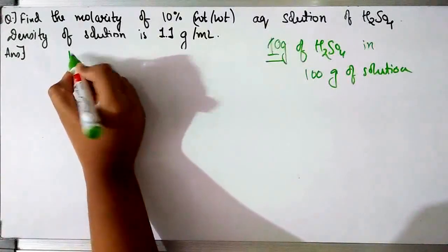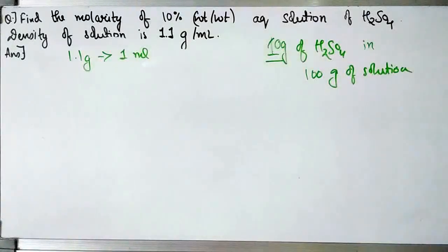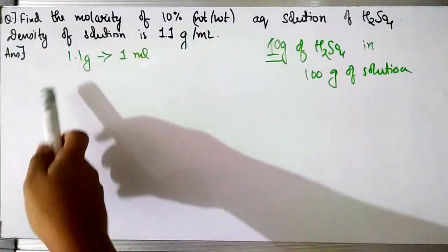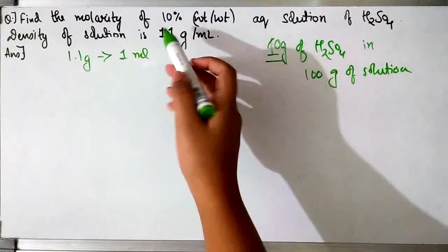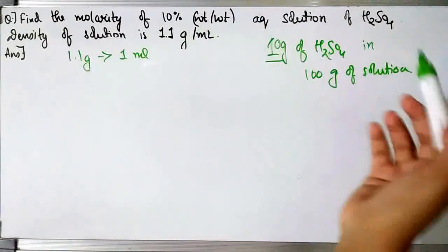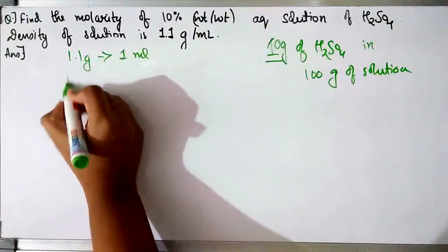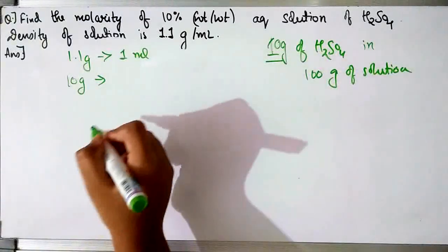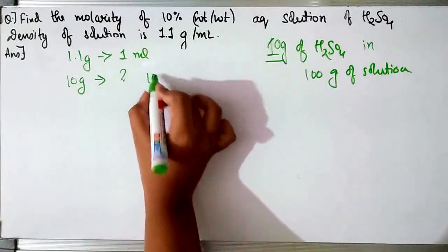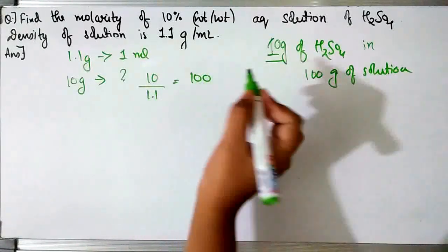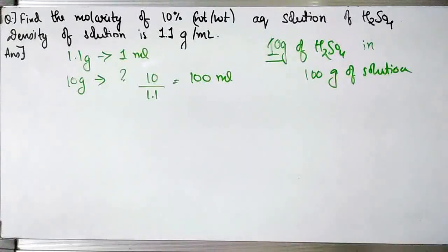The density is 1.1 grams per millilitre, meaning 1.1 grams of solution is present in 1ml. According to the weight-by-weight percentage we have 100 grams of solution. So if 1.1 grams is present in 1ml, then for 100 grams we do 100 divided by 1.1, which gives approximately 90.9ml as the volume of solution.